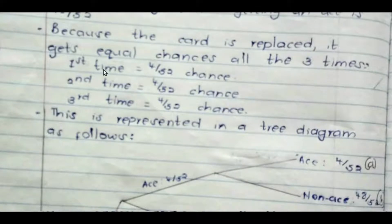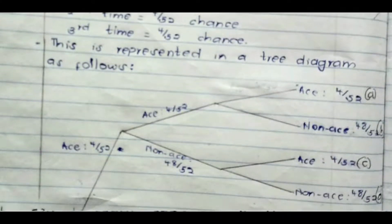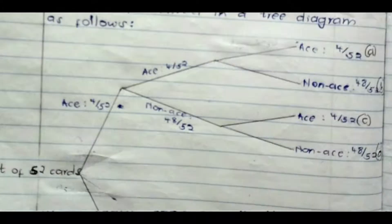So, the first chance you could get it, the second chance you could also get it, and the third chance you could also get it. All those chances are the same. Usually in probability, the first thing we do is to represent the whole statement in a tree diagram.